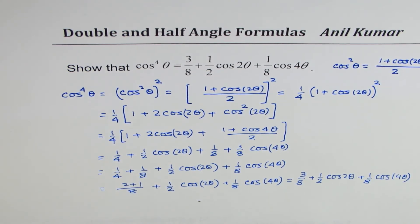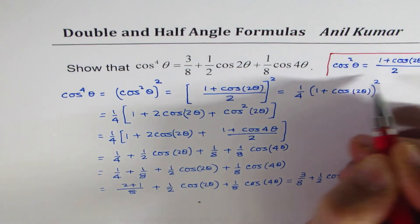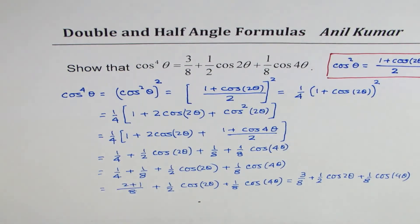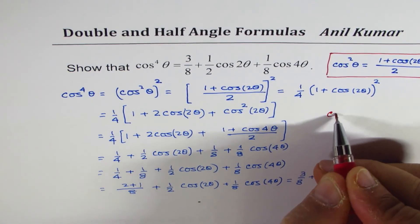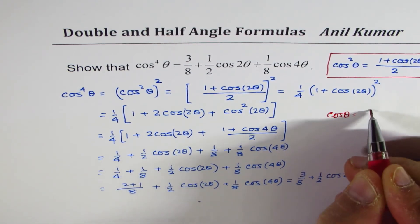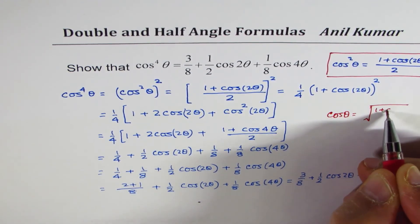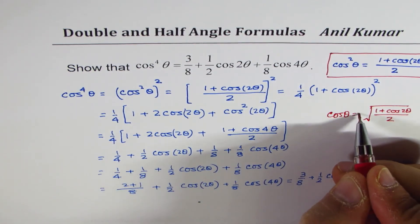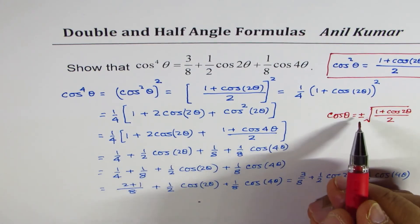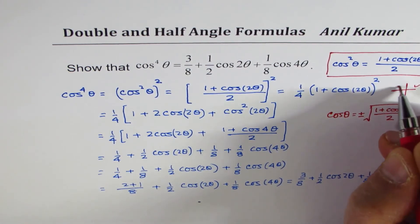In the next video, I will take an example where we will use the half angle formula. Let's get back to this for a moment to prepare for the next video. In this formula, I could also write it as: cos theta equals the square root of 1 plus cos 2 theta divided by 2. Whenever you take the square root, you use plus and minus, and depending on the quadrant you are in, you choose the sign.